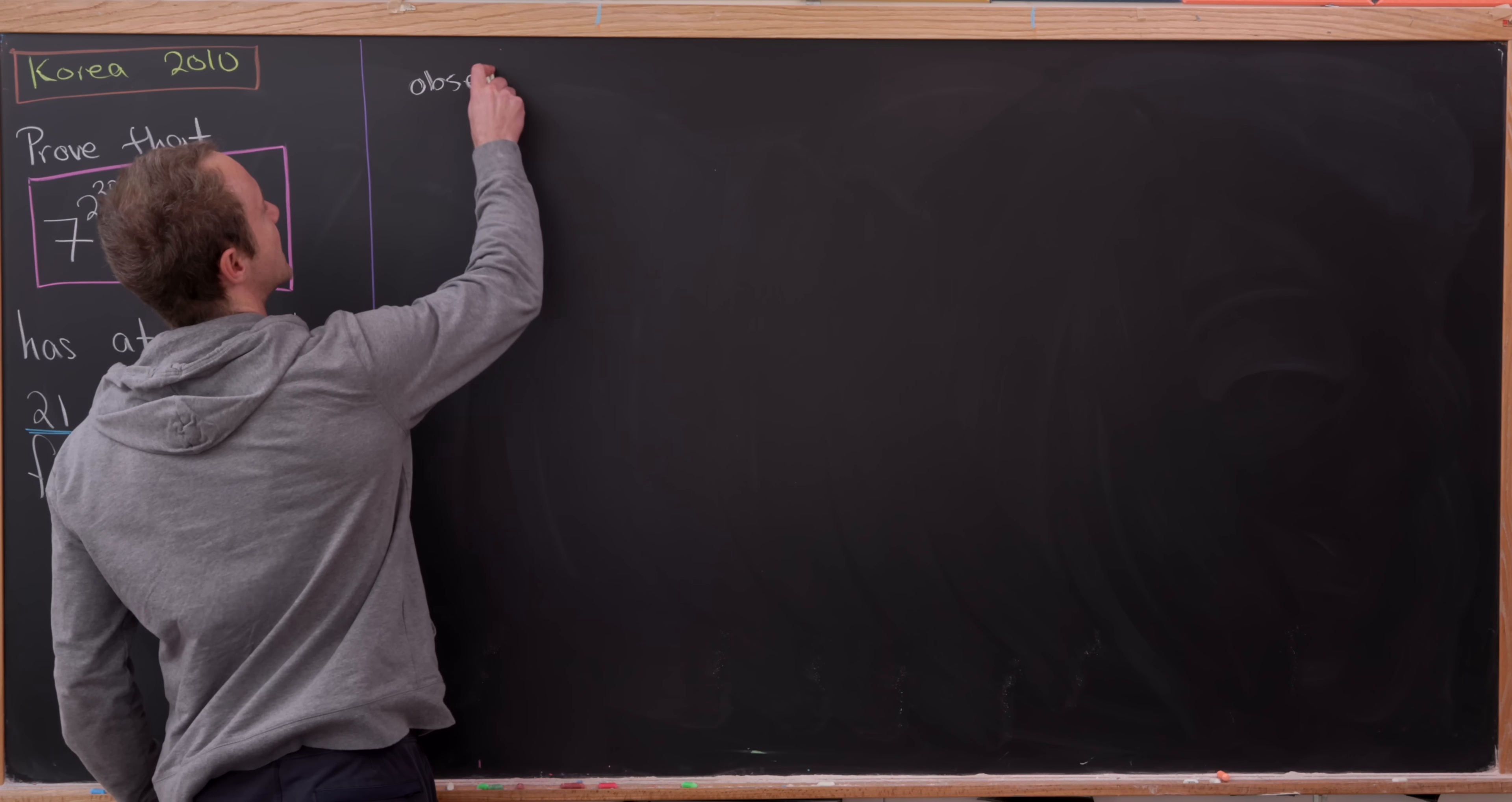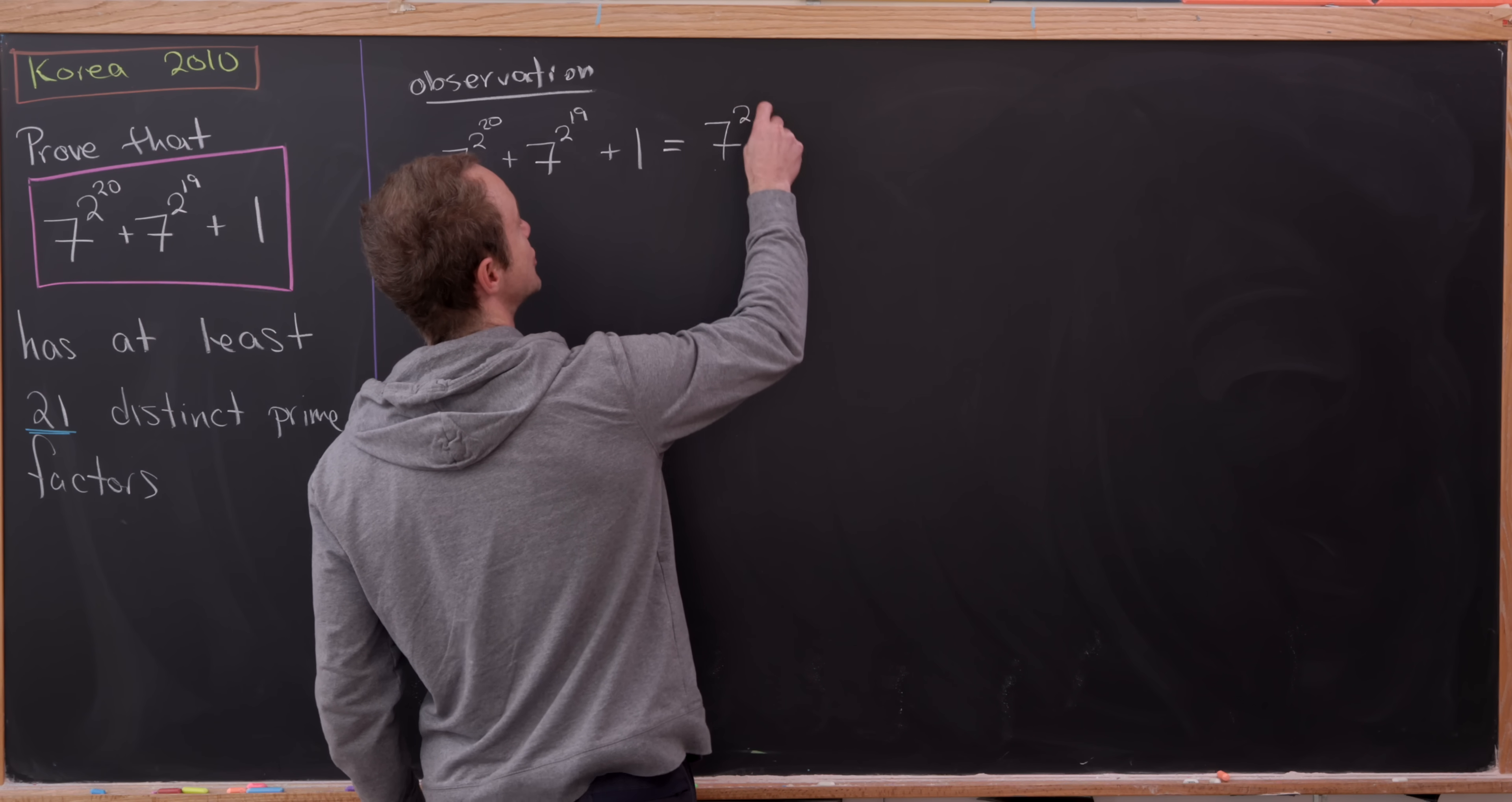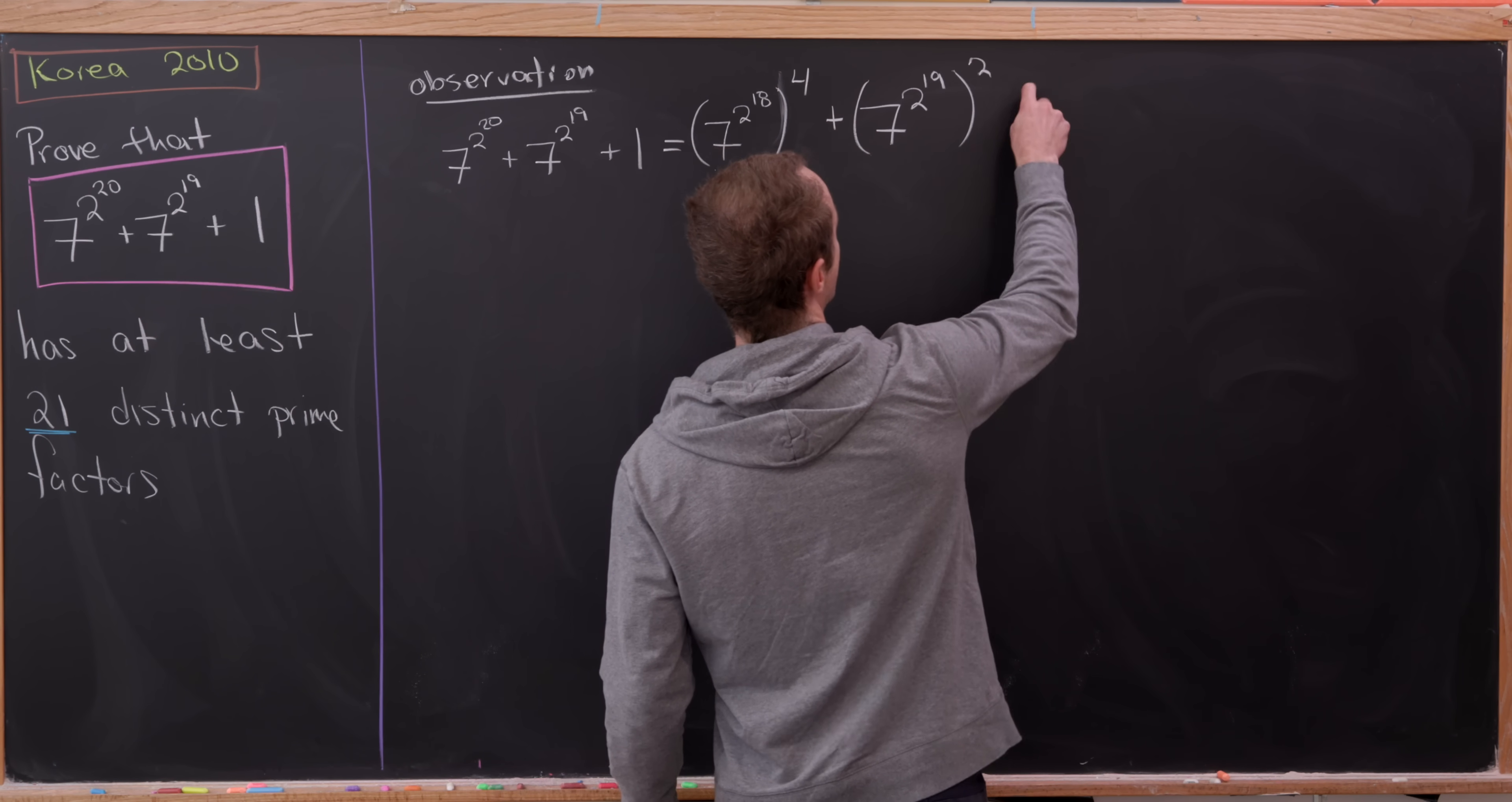Probably the most important thing here is making the following observation on how to write this object. So let's notice that we can write, well I'm just going to copy it over first. So I've got 7 to the 2 to the 20 plus 7 to the 2 to the 19 plus 1. I can in fact write that as 7 to the 2 to the 18 all to the 4th power. And that's by exponent rules because we would multiply the exponents, but that would be multiplying 2 to the 18 and 2 to the 2 giving us 2 to the 20. And then plus 7 to the 2 to the 19 squared plus 1.